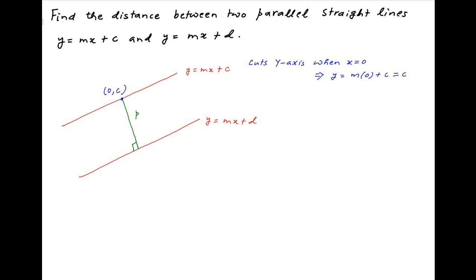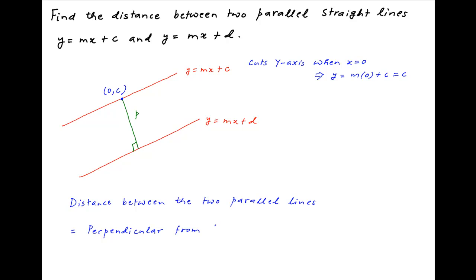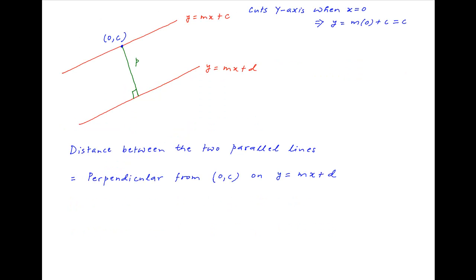From this point on the first line, drop a perpendicular on the second line and let's denote this distance by p. Note that the distance between the two parallel lines is equal to the perpendicular distance from the point (0, c) on the first line to the second line y is equal to mx plus d.